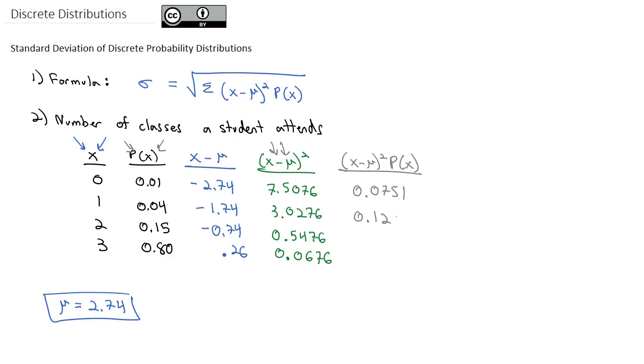Then I do 0.15 times 0.05476, which is 0.0821, and finally 0.80 times 0.0676, and I get 0.0541.